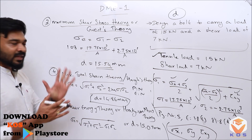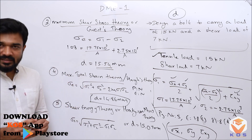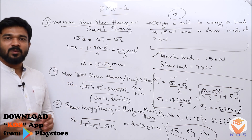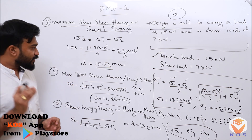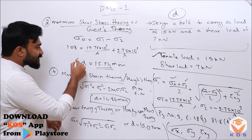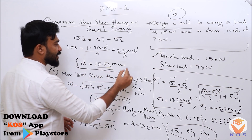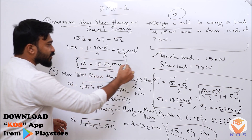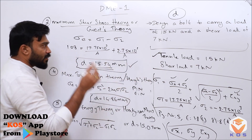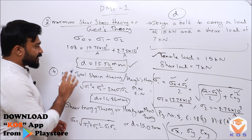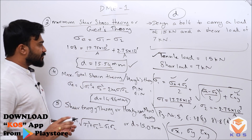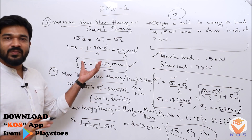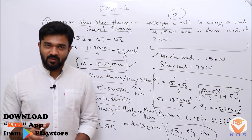Once we apply all five theories of failure and obtain five diameter values, we select the largest value. So the design diameter of the bolt is D = 15.54 mm.